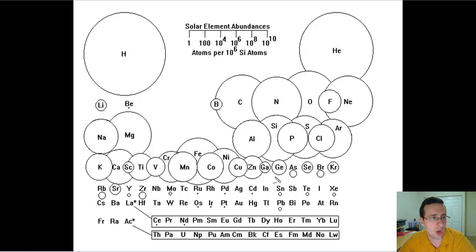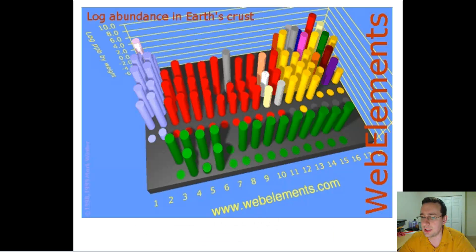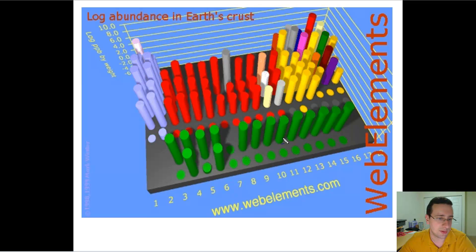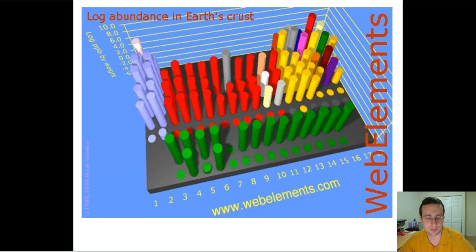In terms of Earth's crust, you will see mostly things like silicon and oxygen, which are very common. You also see a lot of the alkaline and alkaline earth metals, some transition metals, some radioactive elements, and so forth. These pictures show the abundance of elements on Earth's crust.